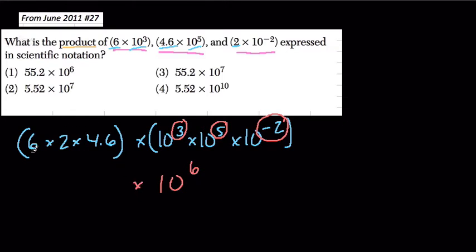And we're almost done. Now 6 times 2 is 12, and then we're multiplying 12 by 4.6. And we can multiply it like this, but I'm going to break it up a little bit.